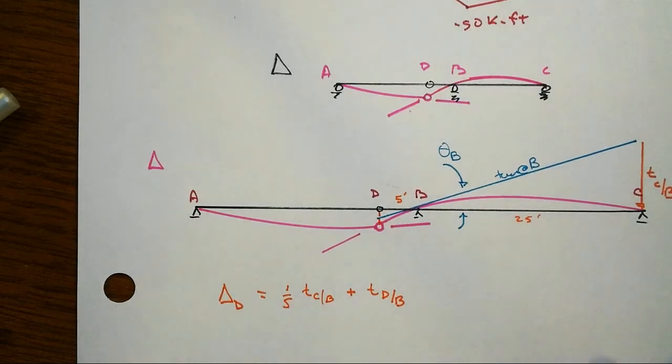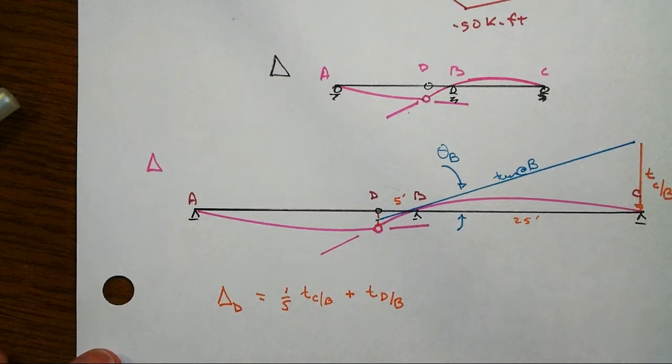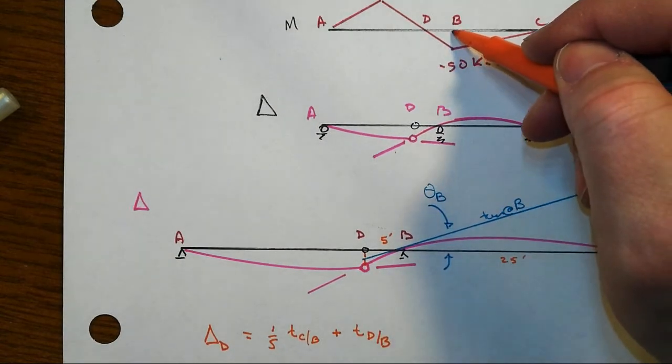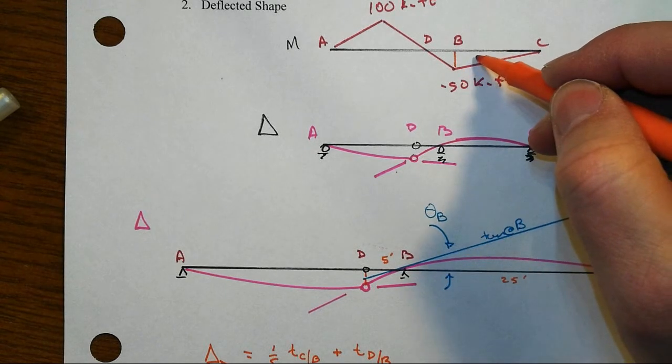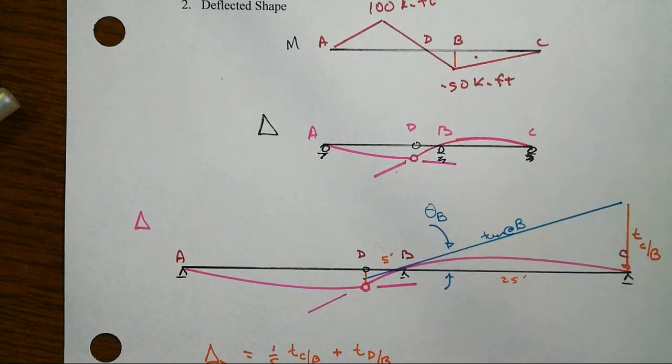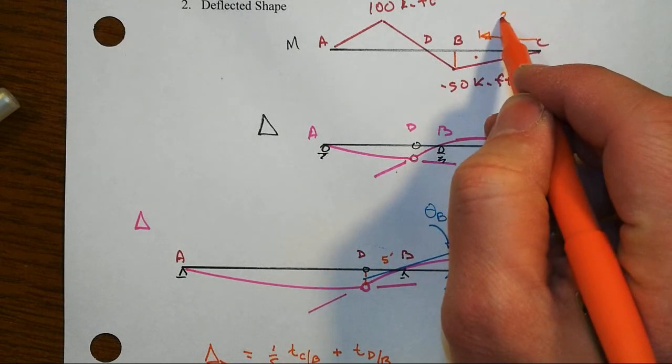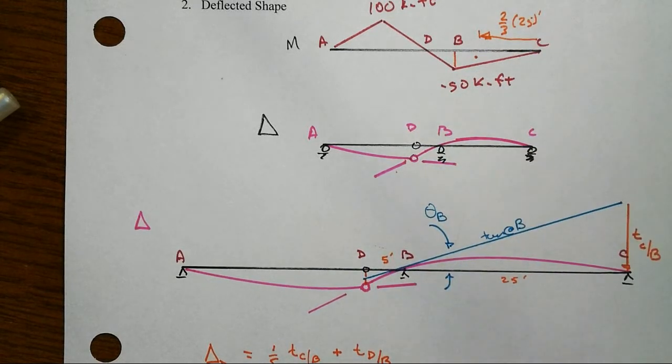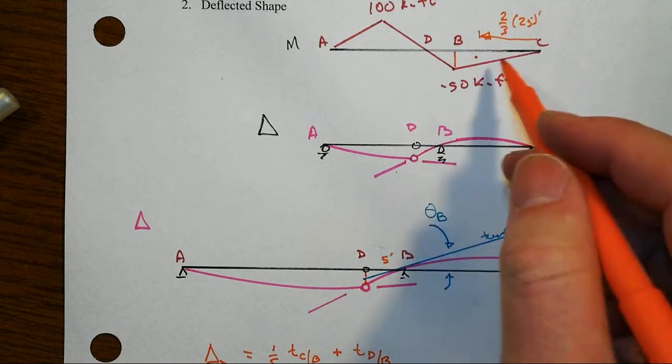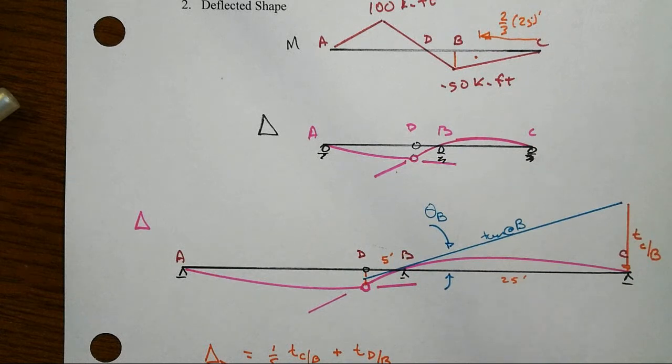So strategy-wise, that's the first part of this. Now the next part, and that's actually not so difficult, that just involves this first moment of area business. And for TCB, you're going to get this area here, right? And you're going to take that first moment with respect to the point of interest. So that's this distance here. That's two-thirds of 25 feet. So that's one-half base times height.